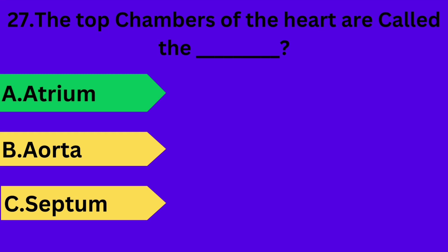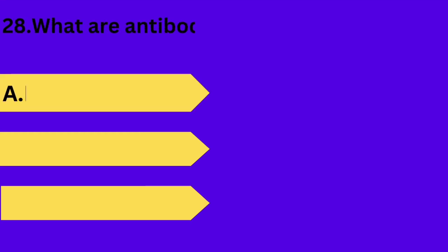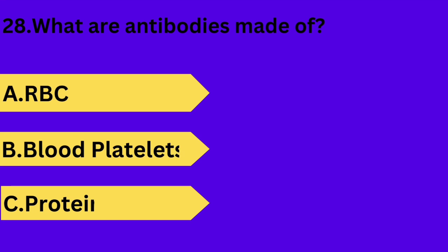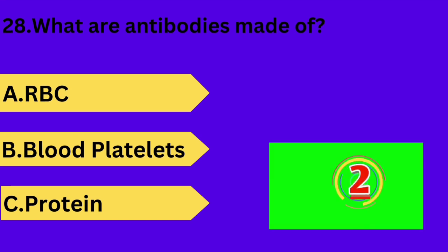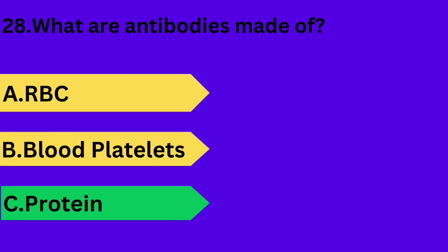And next question is: what are antibodies made of? Option A: RBC. Option B: blood platelets. Option C: protein. Your time starts now. Answer is option C: protein.